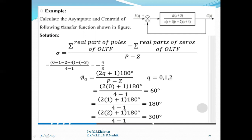Calculate the asymptote and centroid of the following transfer function shown in the figure. What is our sigma? That is the real parts of poles minus real parts of zeros of the open loop transfer function, divided by p minus z. The poles are at s = 0, s = −1, −2, −4, so there are four poles. Their summation is 0 + (−1) + (−2) + (−4). Minus the real part of the zero, which is only at −3. So it becomes −4/3, since poles minus zeros = 4 minus 1 = 3. So the centroid sigma = −4/3 ≈ −1.33.